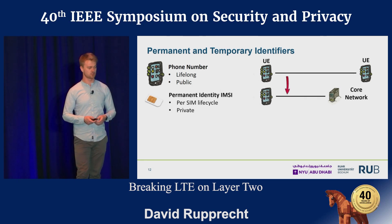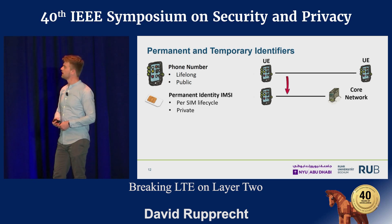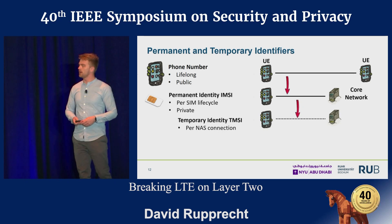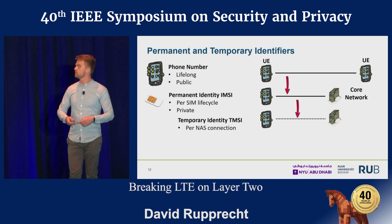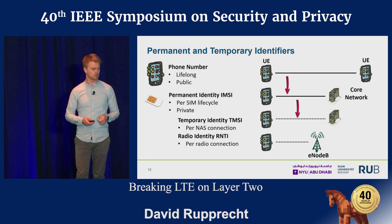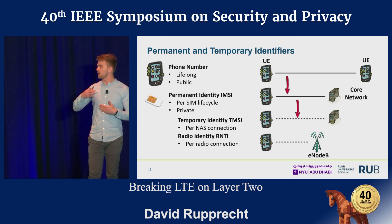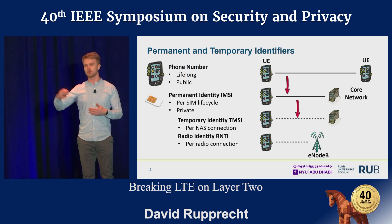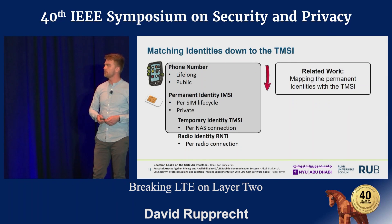Then we have the permanent identity called IMSI, which is only private between your phone and the core network — no attacker should have access to it. For privacy reasons, there is also a temporary identity called TMSI. Related work has already shown that we can map the phone number of the UE to the IMSI and even down to the temporary identity. We also have a third LTE-specific identity — the radio identity called RNTI — which is only active during an active radio connection, used and associated with your phone and data.